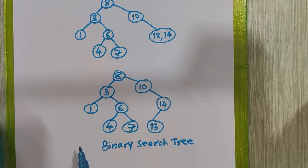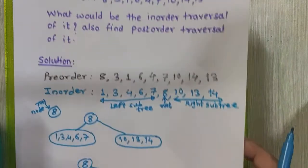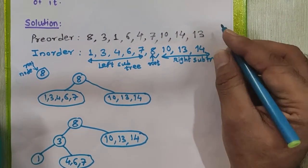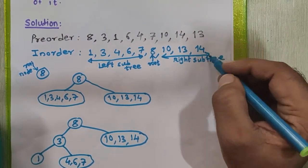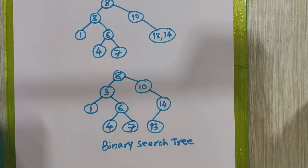To verify whether the binary search tree is correct, traverse the tree in pre-order and in-order fashion. If you get back the original sequences then the tree is correct; otherwise there are mistakes.